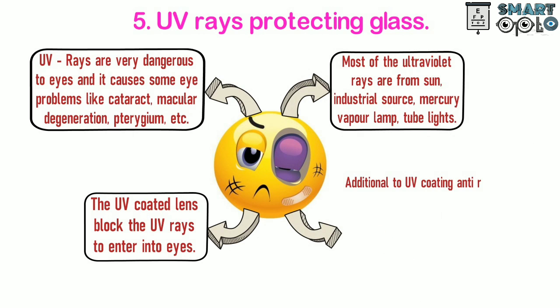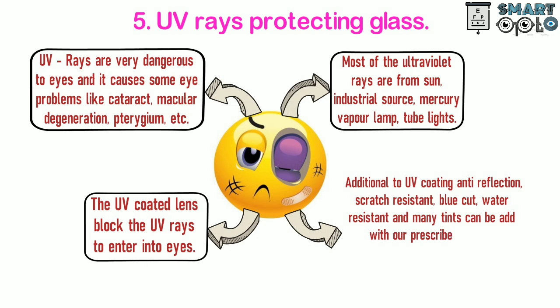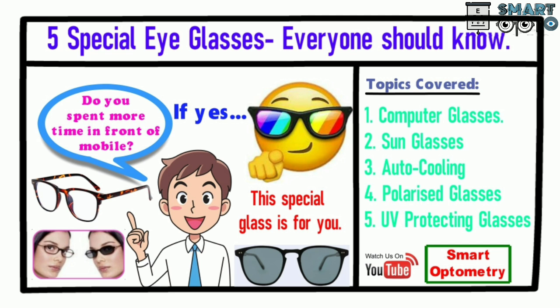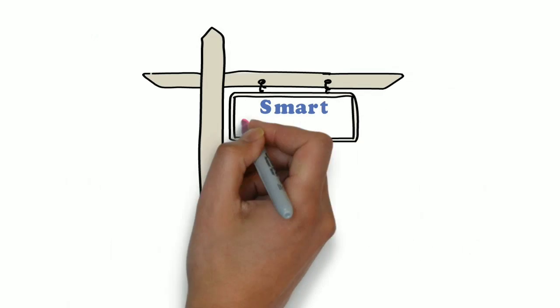Additional to UV coating, anti-reflection, scratch resistant, blue cut, water resistant, and many tints can be added with our prescribed glass. In this video we came to know about five special types of glasses. We must use accordingly. For more information please subscribe to Smart Optometry.